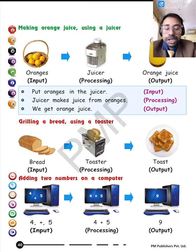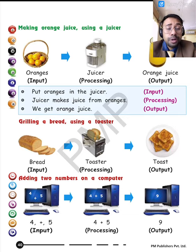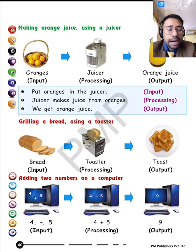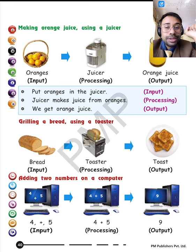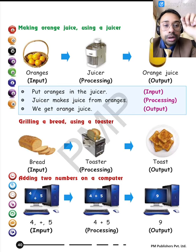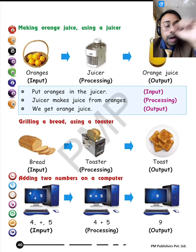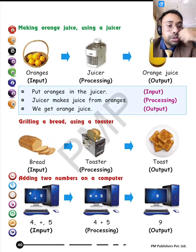Now, there are certain examples of input, processing, and output. For a mixer grinder or a juicer, what is the input? Any form of fruit that you like — suppose you like oranges. So oranges are the input. The juicer is processing the orange, and what is the final output that you are getting? The final output is the orange juice.